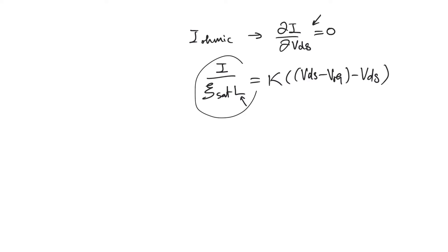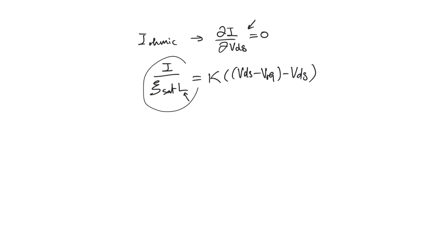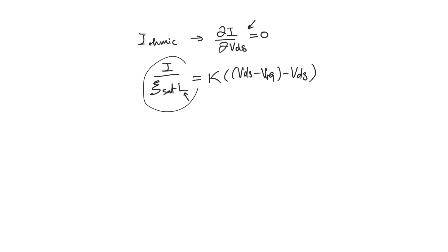However, we have to consider cases where ESAT·L is not a large quantity. We find that saturation occurs when this relation holds, but unfortunately it is not an expression for VDS alone — it is a relationship between VDS and the current I. So saturation happens when VDS and I are related in this way.